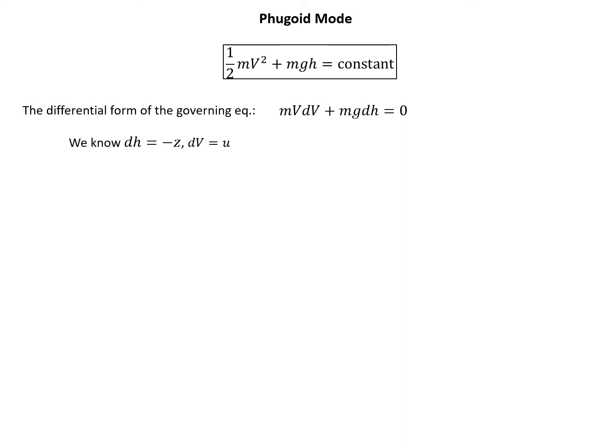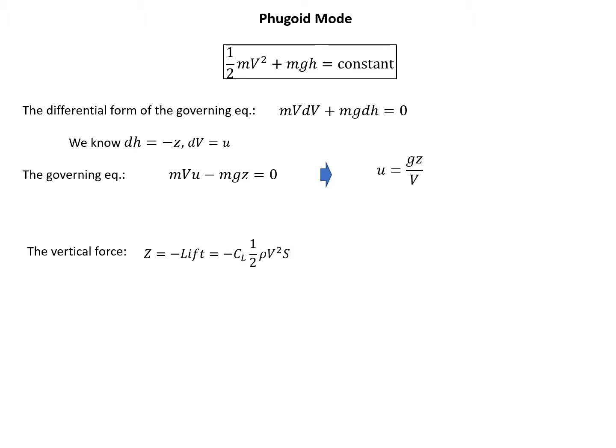The change in height is the change in z-position, but since the positive z-axis points toward the earth, it is opposite to h, giving a negative sign. The change in velocity v is the change in streamwise velocity u. Rewriting the equation by substituting dv and dh, it becomes mvu minus mgz equals 0, or u equals gz divided by v. The vertical force is opposite to lift, where lift equals C_L times one-half ρv²S. Taking the partial derivative ∂Z/∂u gives minus C_L ρvS.